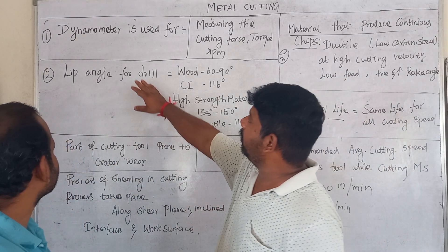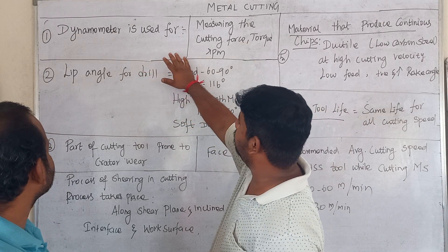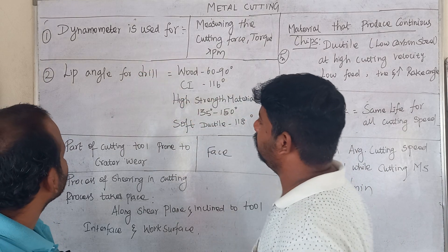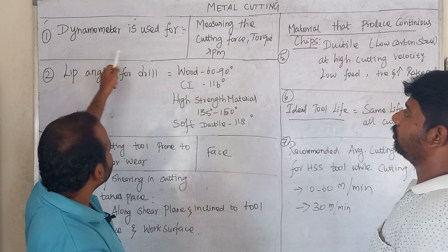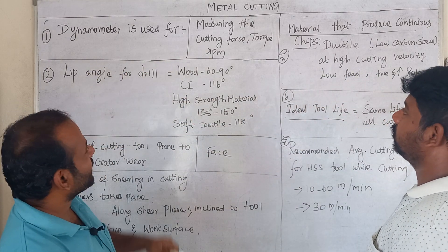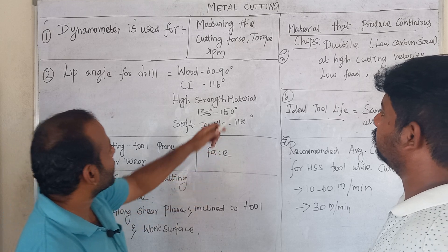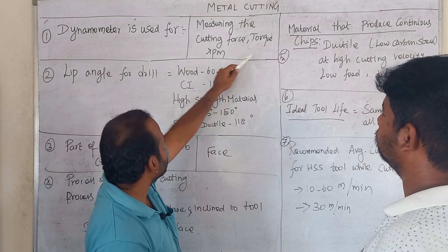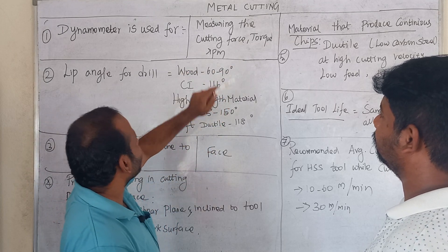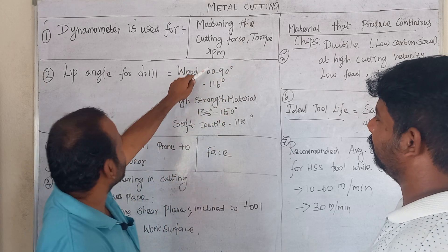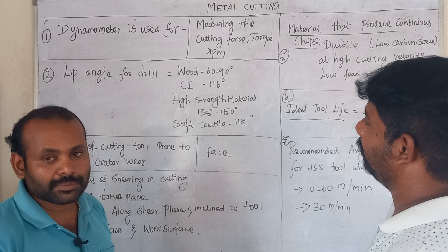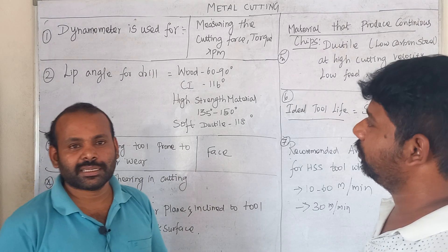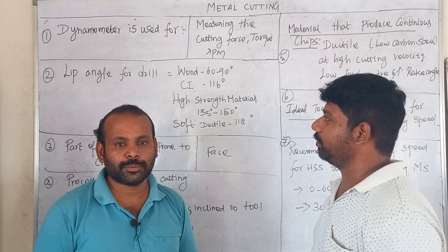First one: dynamometer is used in metal cutting. Dynamometer is used to measure the cutting force. We can measure the cutting speed, and for three purposes we can measure the metal cutting while machining.